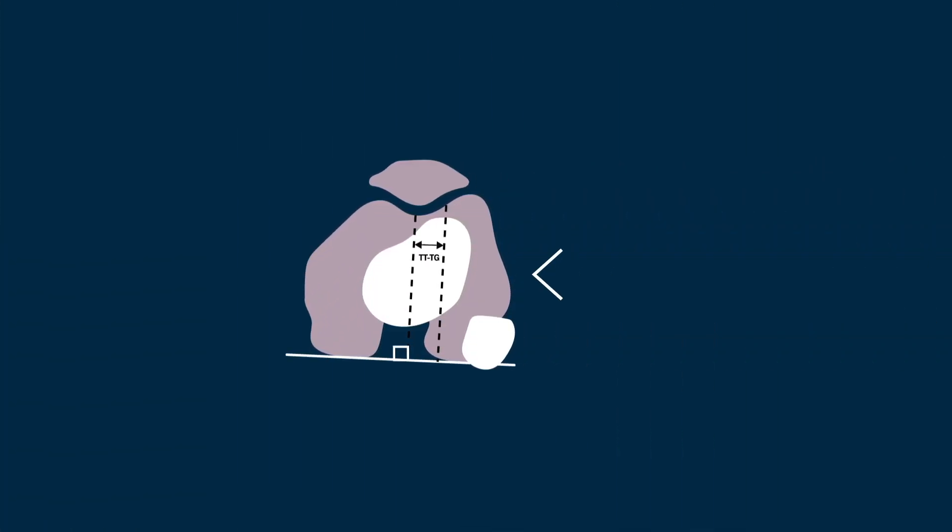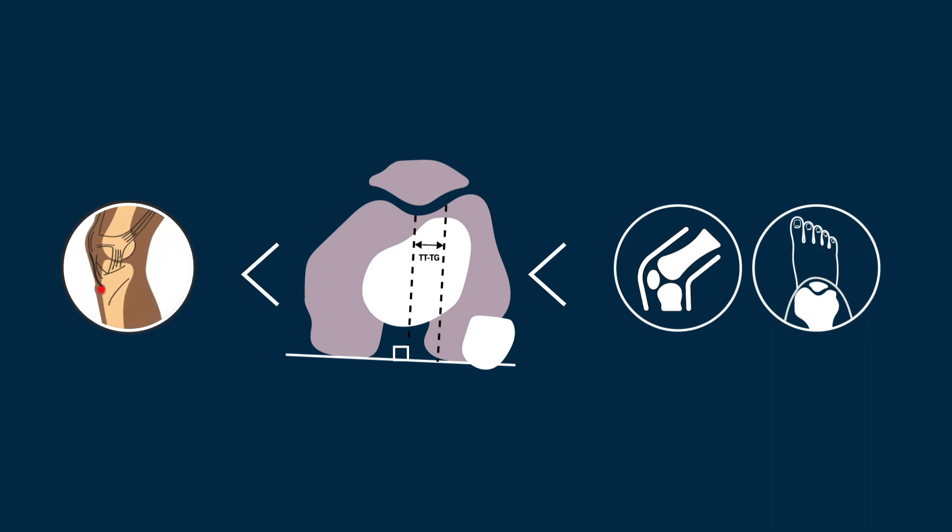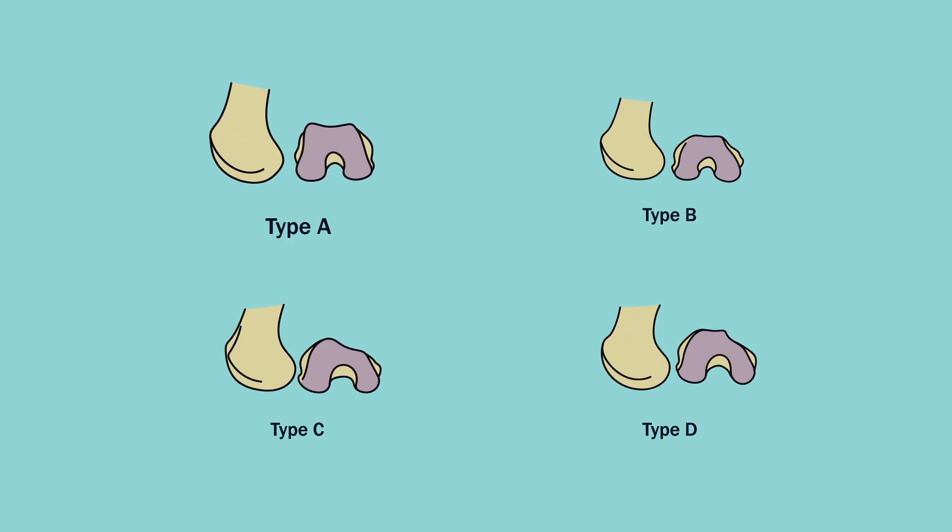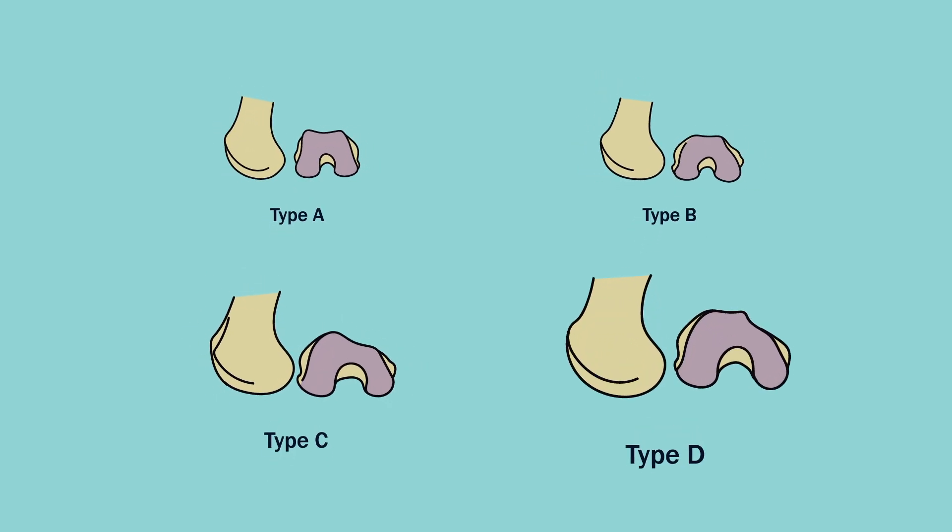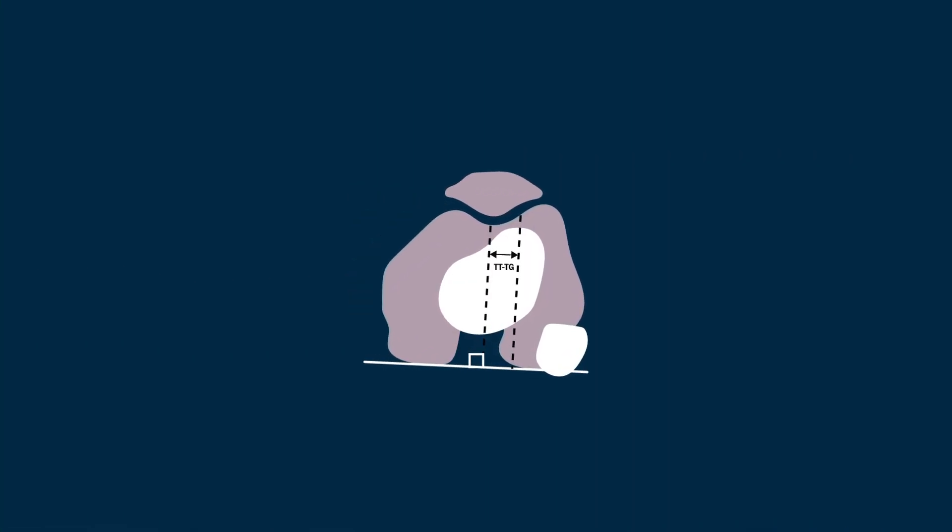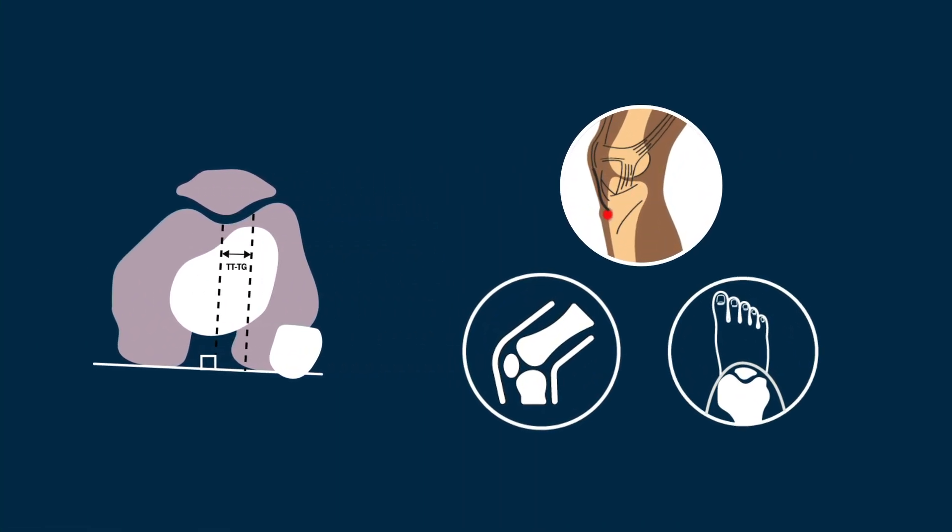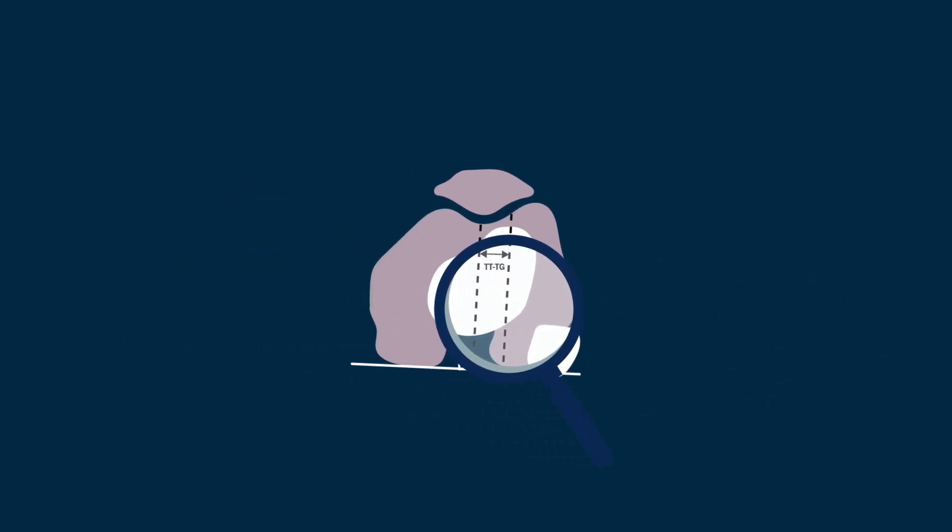In summary, the TTTG distance is affected more by knee rotation and trochlear groove medialization and less by tibial tubercle lateralization, and it increases with an increasing grade of femoral trochlear dysplasia. These correlations between the TTTG distance and its related components could lead to a better understanding of the TTTG distance.